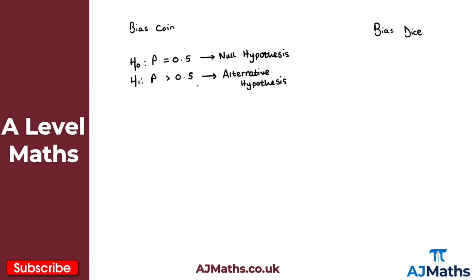What we have here is what we call a one-tailed test — this is an example of a one-tailed hypothesis test. Notice that for H0, the parameter p is always equal to some value. That is always the same format for a null hypothesis — it will always be equal to some specific value.